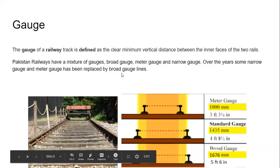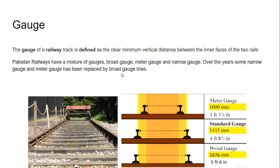Remember, the broader the gauge, the more stable and safely the train will move. However, the problem is that the broader the gauge, the more expensive it gets. So if you have enough capital and funding, you can of course build broad gauge lines. Over the years, some narrow gauge and meter gauge lines have been replaced by broad gauge lines. In summary, gauge is the distance between the two rails.